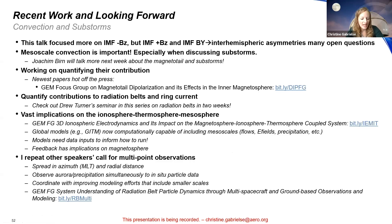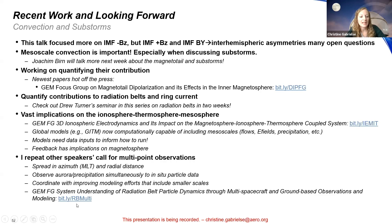There are calls for multipoint observations — more satellites spread in azimuth or MLT and radial distance, simultaneous aurora and precipitation observations with in-situ particle data for magnetosphere-ionosphere coupling understanding, and coordinating with improving modeling efforts that include smaller scales. There's also a GEM focus group on multi-spacecraft and ground-based observations. We covered a lot of material, and I'll answer any questions.